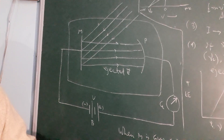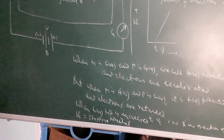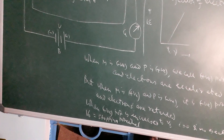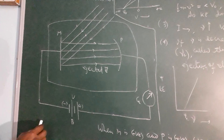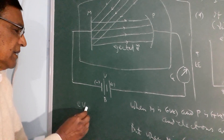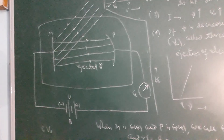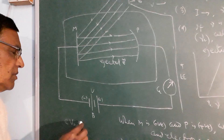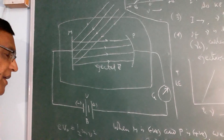If we increase the negative potential to V0, it is found that there is no photocurrent and no ejection of electrons. This V0 is called the stopping potential, and it is a measure of the kinetic energy of the electrons. The energy eV0 given to the electron to retard its motion equals the kinetic energy, half mv squared.